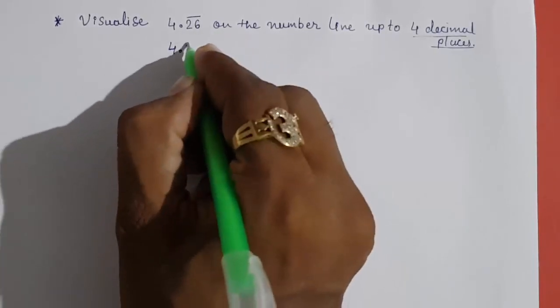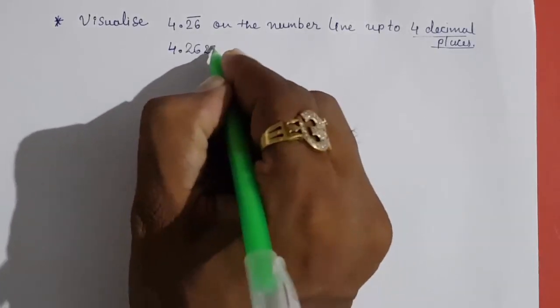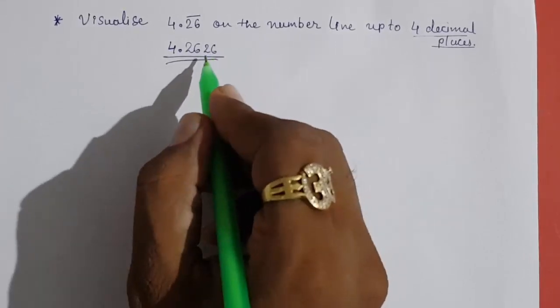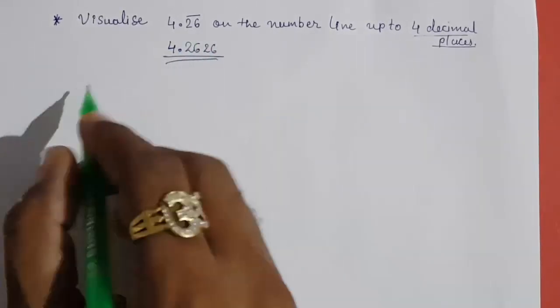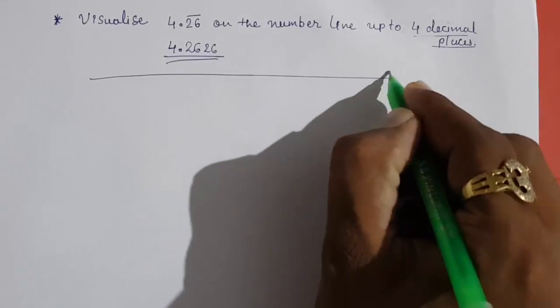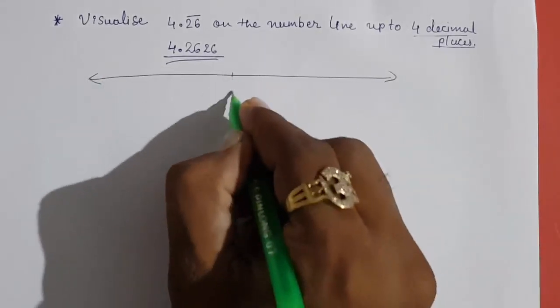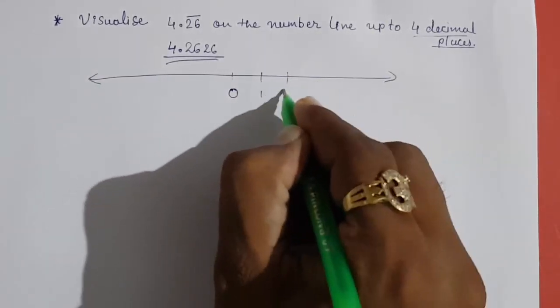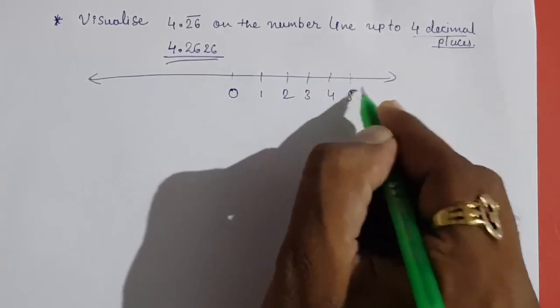So 4 decimals means 2, 6, 2, 6 – up to this number we have to magnify and represent on the number line. First, we draw our number line: 0, 1, 2, 3, 4, 5, 6, and on this side minus 1 and minus 2.